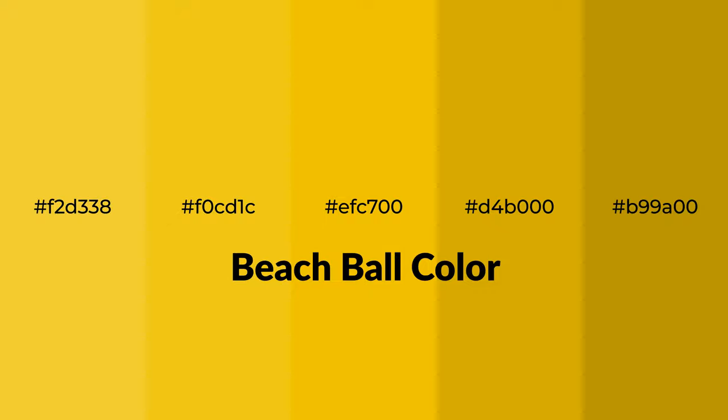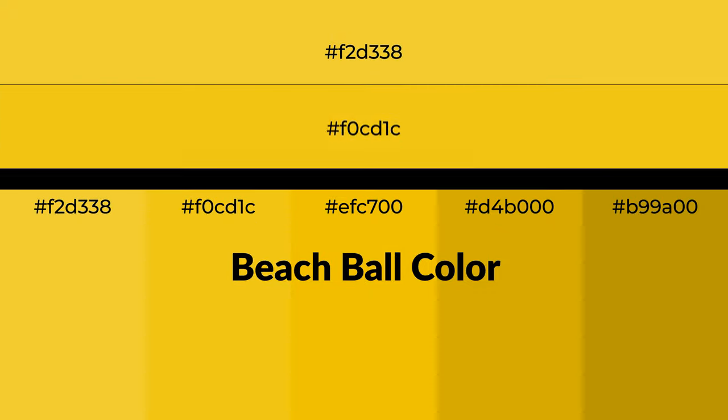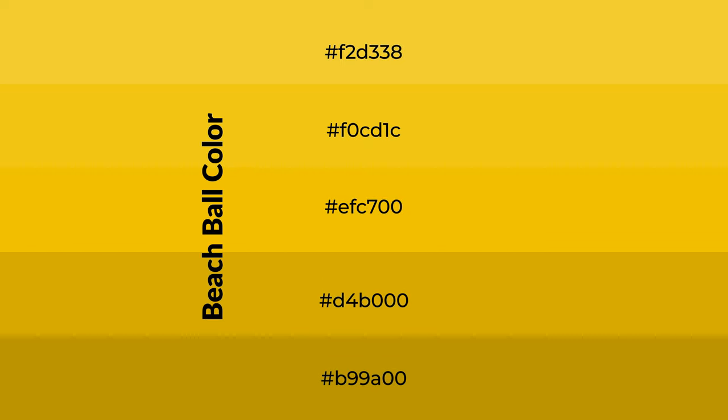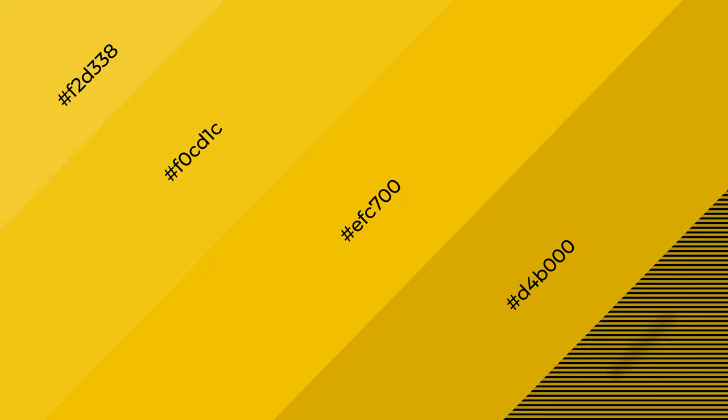Warm shades of beach ball color with yellow hue for your next project. To generate tints of a color, we add white to the color. Tints create light and exquisite emotions. To generate shades of a color, we add black to the color, and it is used in patterns, 3D effects, and layers. Shades create depth and drama.